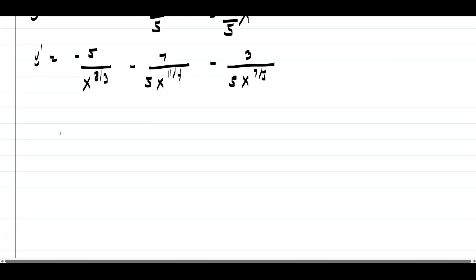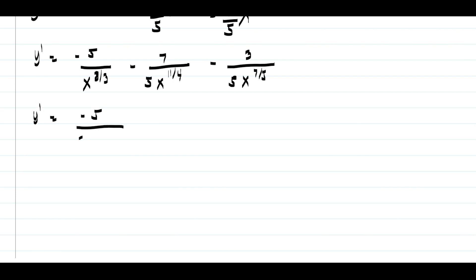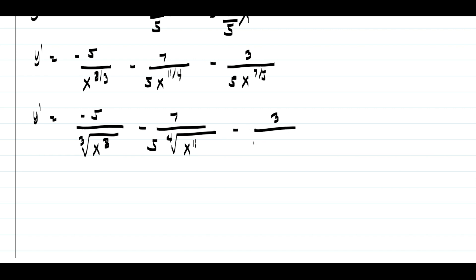Now let us rewrite this back into radical form. So we have y prime equals negative 5 over the cube root of x raised to 8, minus 7 over 5 times the fourth root of x raised to 11, minus 3 over 5 times the fifth root of x raised to 7.